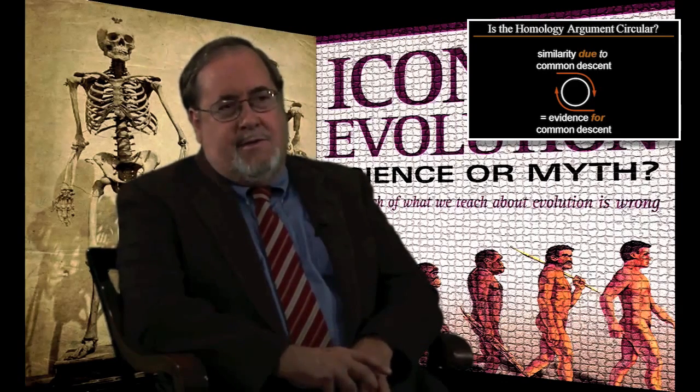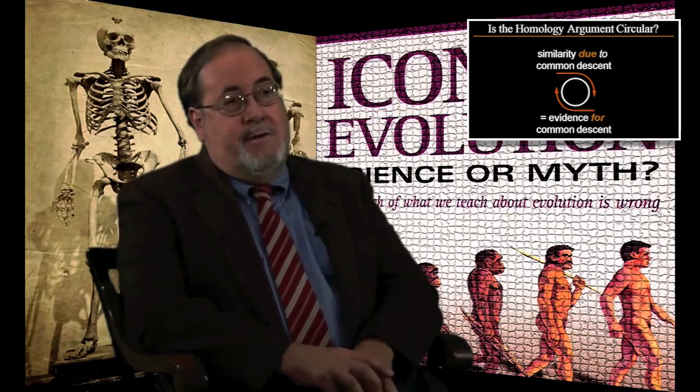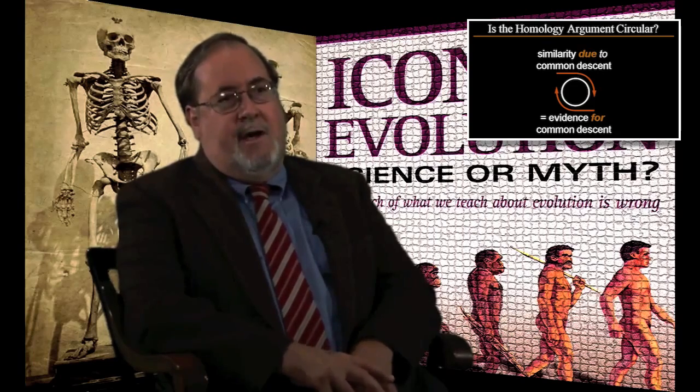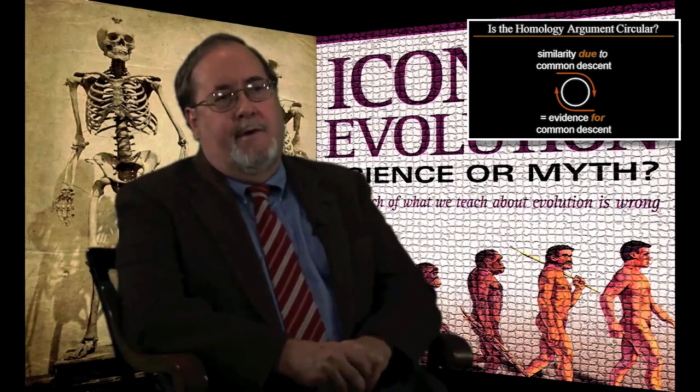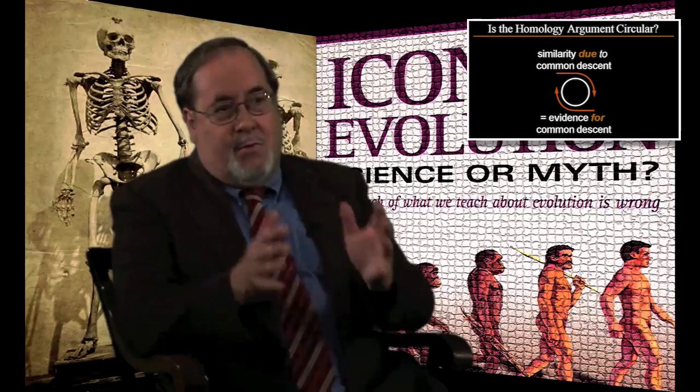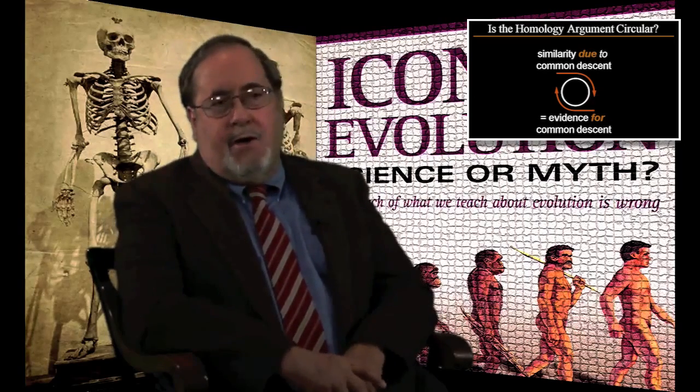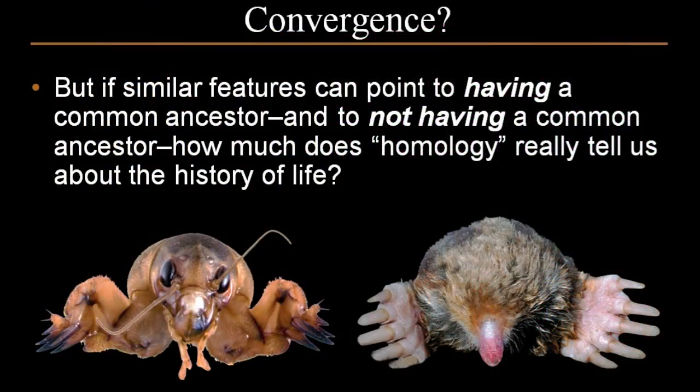Although I wrote Icons of Evolution ten years ago, it took many biologists a long time to realize this. Recently, Richard Dawkins — an outspoken defender of Darwinism — in his book The Greatest Show on Earth recognized this problem: you cannot use a word defined in terms of common ancestry as evidence for common ancestry. Dawkins's solution is to use another word: homeomorphic. But it's a nice try that doesn't really solve the problem. The question remains — how do you use similarities and differences to show common ancestry as opposed to common design?